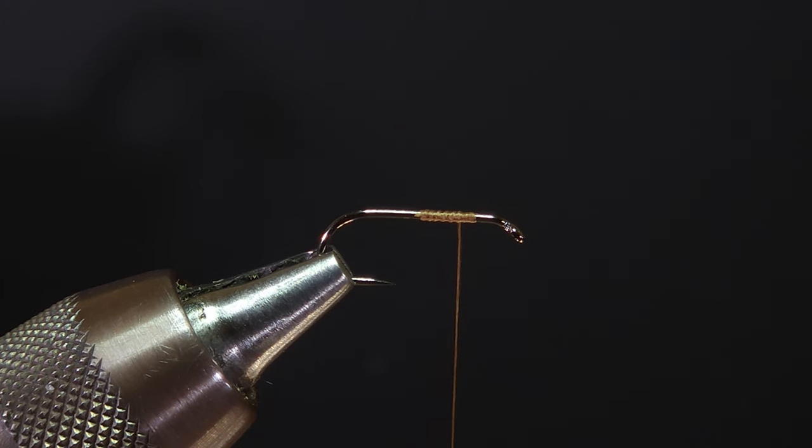I've got my thread secured to the hook shank here and positioned at the wing tie-in point, about two to three hook eye widths behind the eye itself.